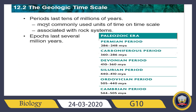Periods are the most commonly used units of time on the geologic time scale, lasting tens of millions of years, and each period is associated with a particular type of rock system. Epochs are the smallest units of geologic time and last several million years.